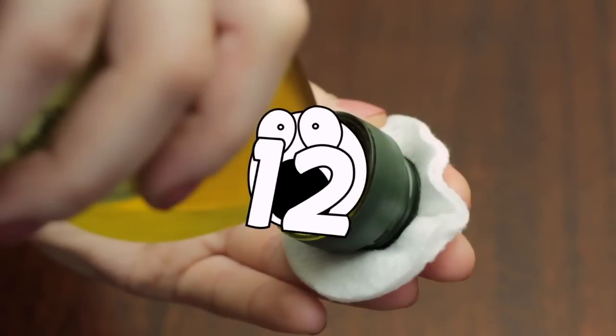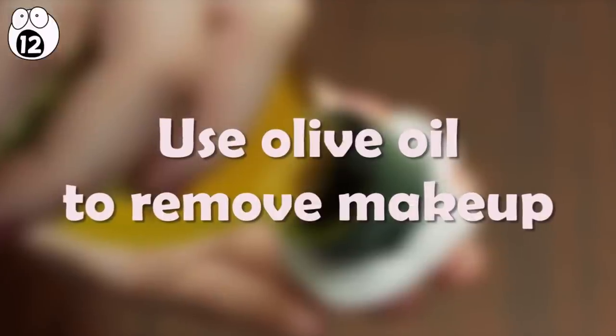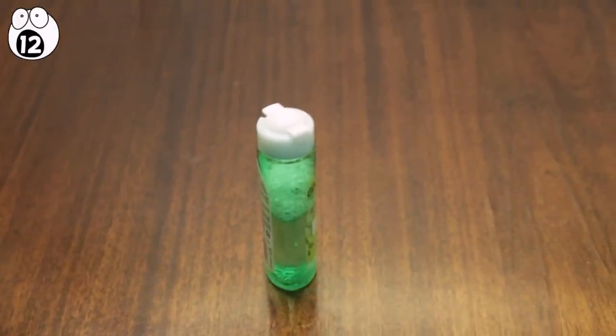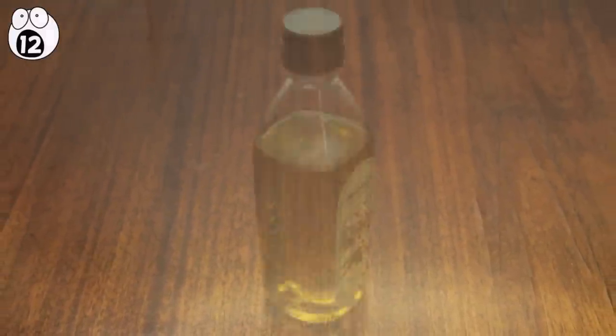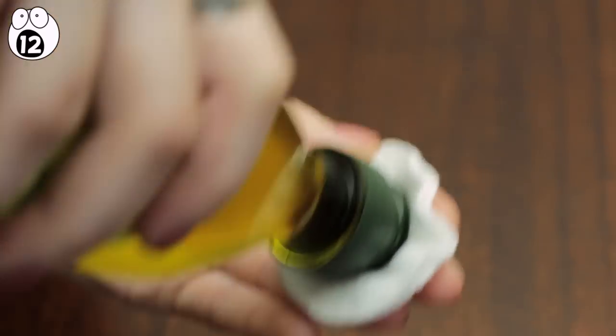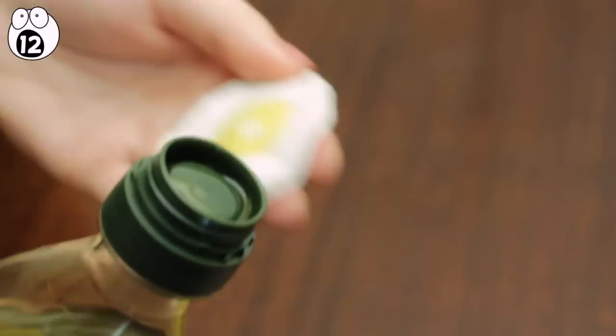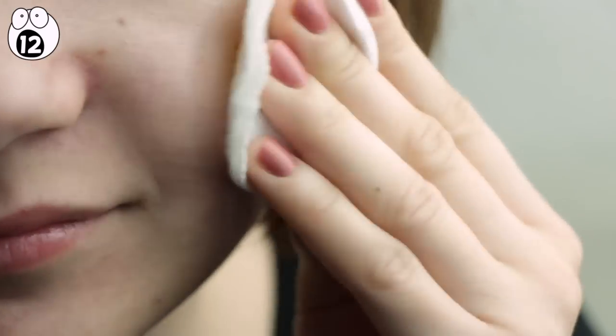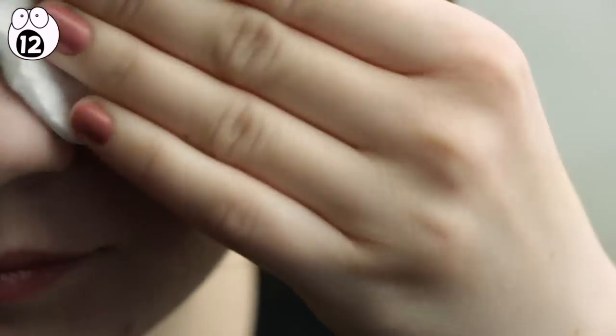Number 12. Use olive oil to remove makeup. If you don't have your normal makeup remover on hand, and yet still need to cleanse your skin, olive oil can be used as a substitute, as long as it is extra virgin, that is. This natural oil has a similar chemical structure to the waxes and oils used in makeup, and so can be easily used to dissolve foundation, eyeshadow, and mascara.